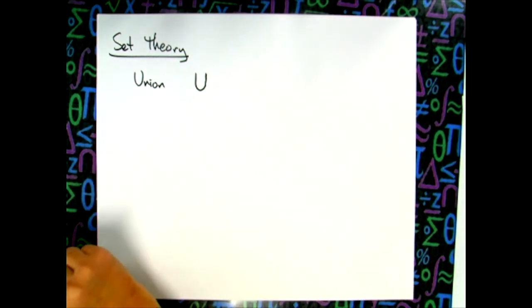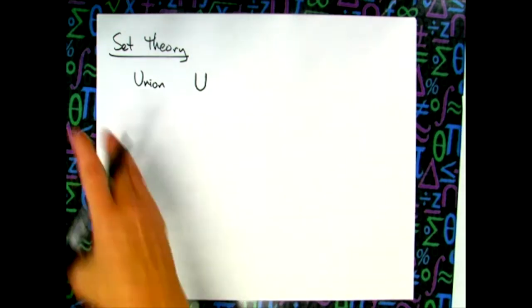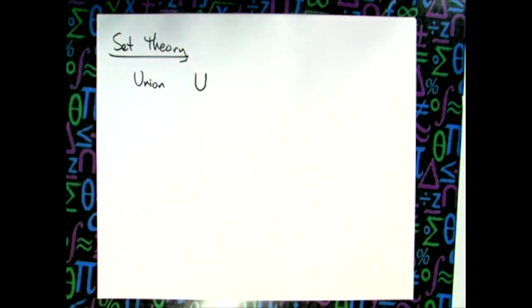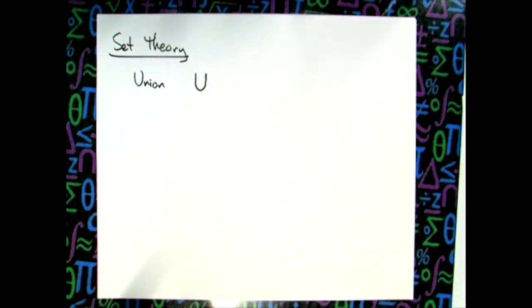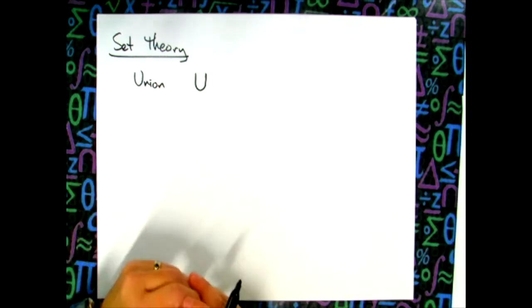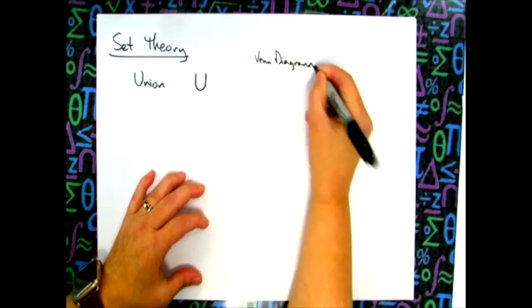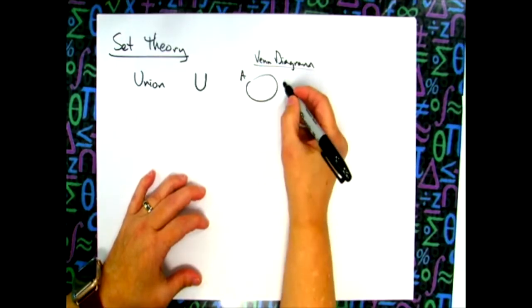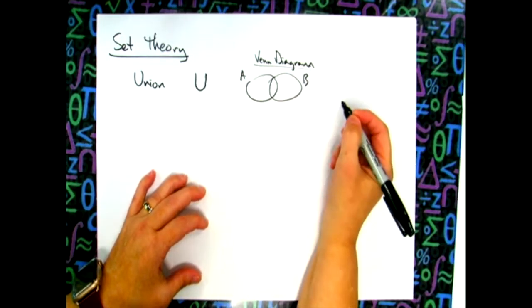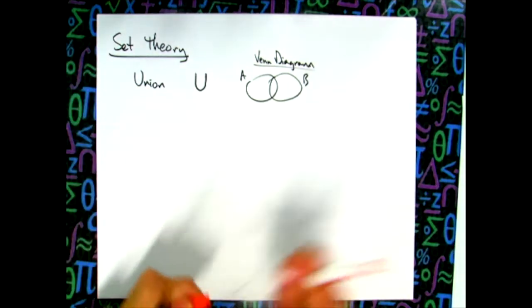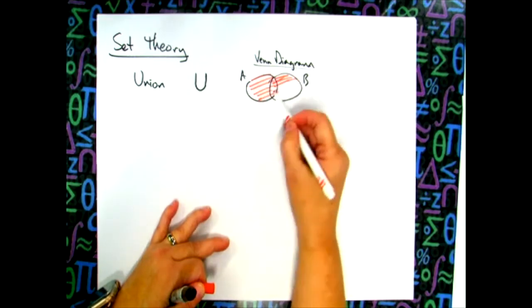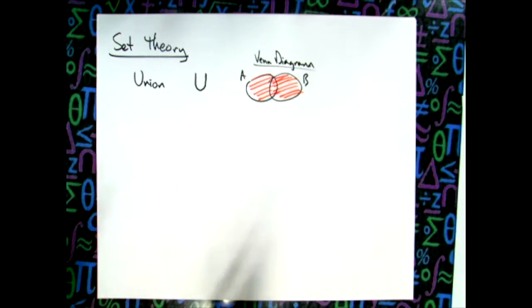Think about what the word union means in general — when you get married you form a union, you're joining things together. In set theory, if you have two sets and you want to union them, you put them all together. Using a Venn diagram, set A and set B unioned means everything in set A and everything in set B combined is the answer.